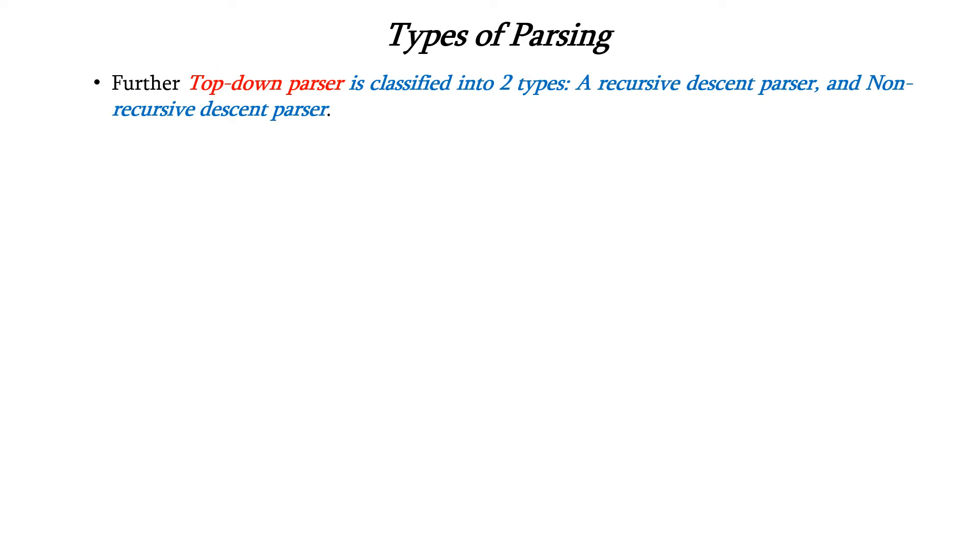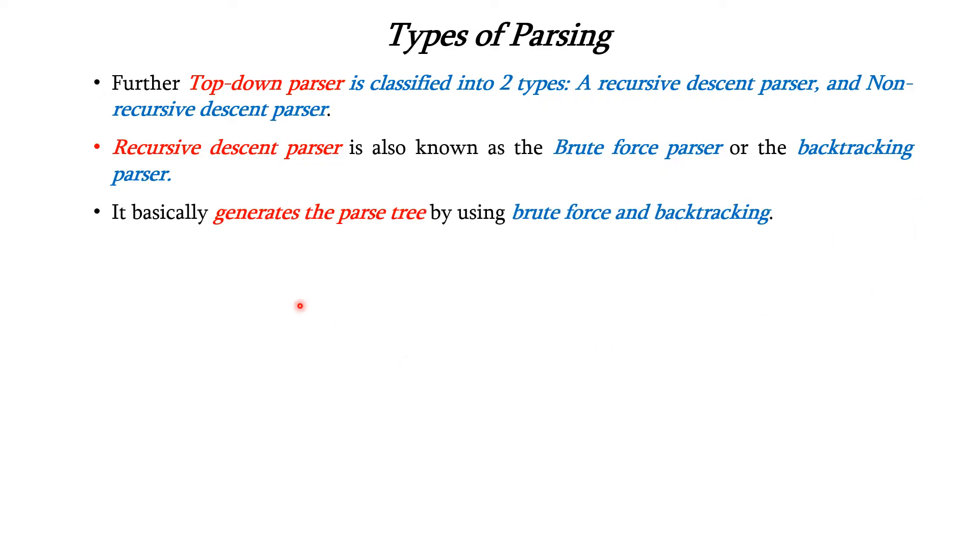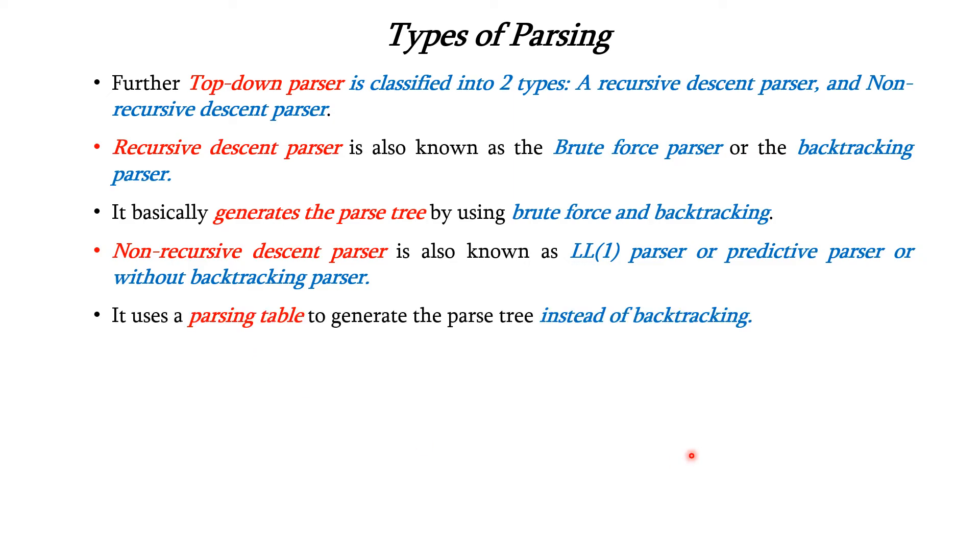Further, the top-down parser is classified into two types as shown in the diagram: recursive descent parser and non-recursive descent parser. The recursive descent parser is also called the brute force parser or backtracking parser because it basically generates the parse tree by using brute force or backtracking methodology. Non-recursive descent parser is also known as LL1 parser or predictive parser or without backtracking parser because it uses a parsing table to generate the parse tree instead of using the backtracking methodology.